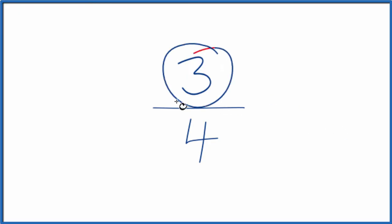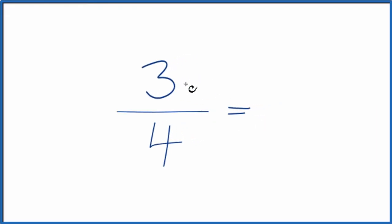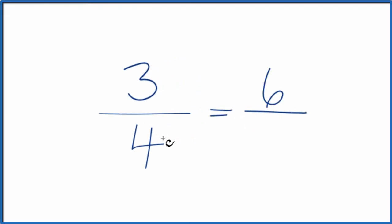So we could double the numerator and the denominator here. That would give us an equivalent ratio. So 2 times 3 is 6, 2 times 4 is 8, and that's an equivalent ratio. If you divide 3 by 4 or 6 by 8, you get 0.75. These are equivalent, it's just that they're represented differently.